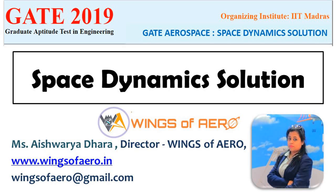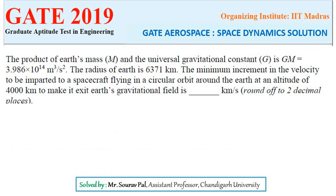Today we will see space dynamics solution asked in K-2019 Aerospace Engineering. The product of Earth's mass and the universal gravitational constant is GM equals 3.986 x 10^14 m³ per second squared. The radius of Earth is 6,371 km.